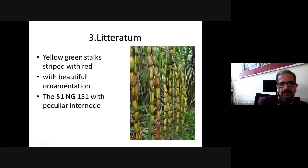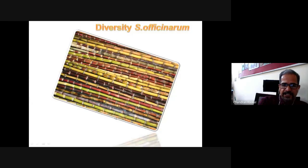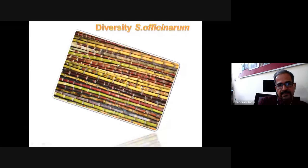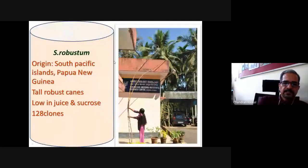The overall diversity of S. officinarum with respect to rind color ranges from green and yellow to dark purple and purple-black, with many striped canes showing yellowish-green backgrounds with purple stripes, green with yellow stripes, and other combinations. The collection also includes stumas-type canes.